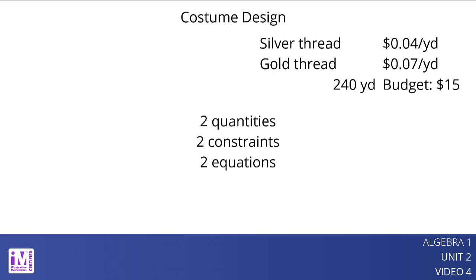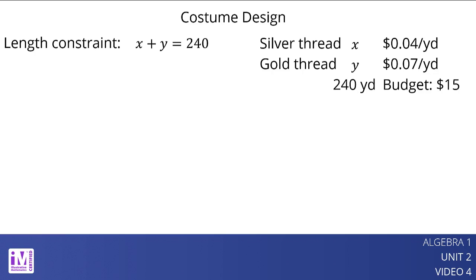Let x represent yards of silver thread and y represent yards of gold thread. The length constraint can be represented by the equation x plus y equals 240. The cost constraint can be represented by the equation 0.04x plus 0.07y equals 15.